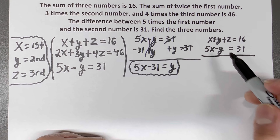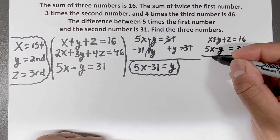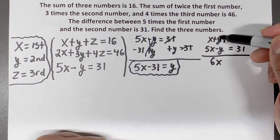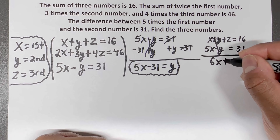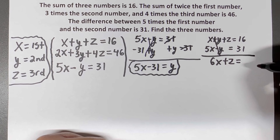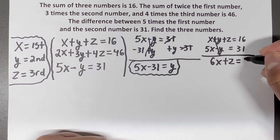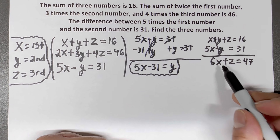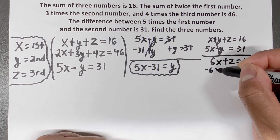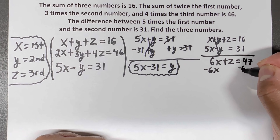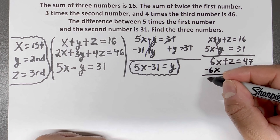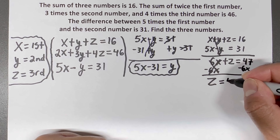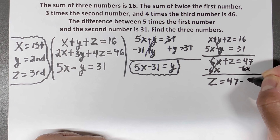When I add those two equations together, x plus 5x gives me 6x. Y minus y cancels. I have a positive z, and that equals 16 plus 31, which gives me 47. So 6x plus z equals 47. Then I subtract 6x from both sides to get z equals 47 minus 6x.